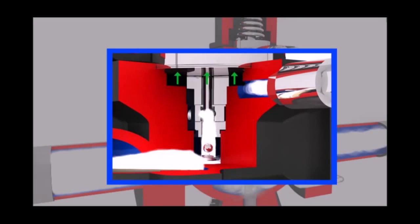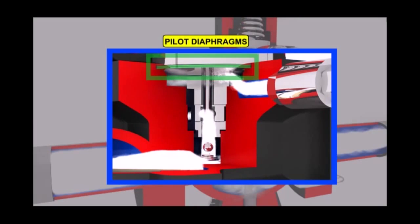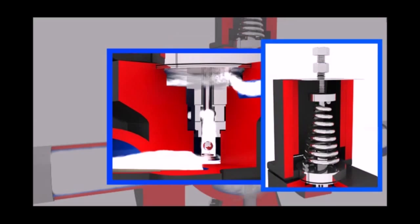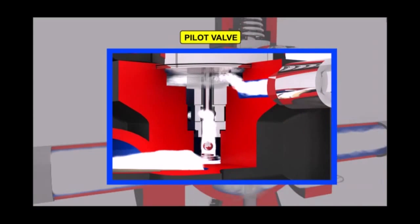When the upward pressure of feedback steam on the diaphragm balances the downward force of the spring, the pilot valve throttles.